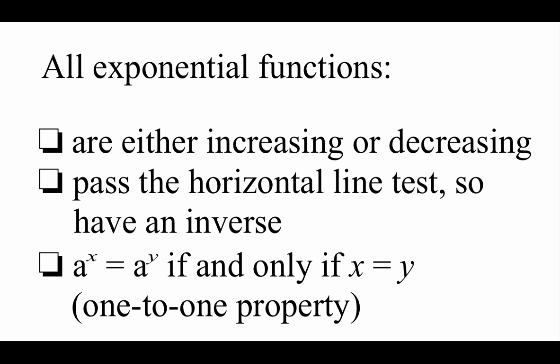All exponential functions have a few properties that hold true for them. First, all of these graphs are either going to be increasing or decreasing — meaning as we read our graph from left to right, the graphs are always going to be going up or heading down. Second, they are all going to pass the horizontal line test, so we're going to be able to find inverses for these things a little bit later on in the chapter. And this last one: we've got the one-to-one property. So if we've got a to the x-th power equaling a to the y-th power with that same base a value, then the only way that can happen is if those x and y powers are actually equal to each other.